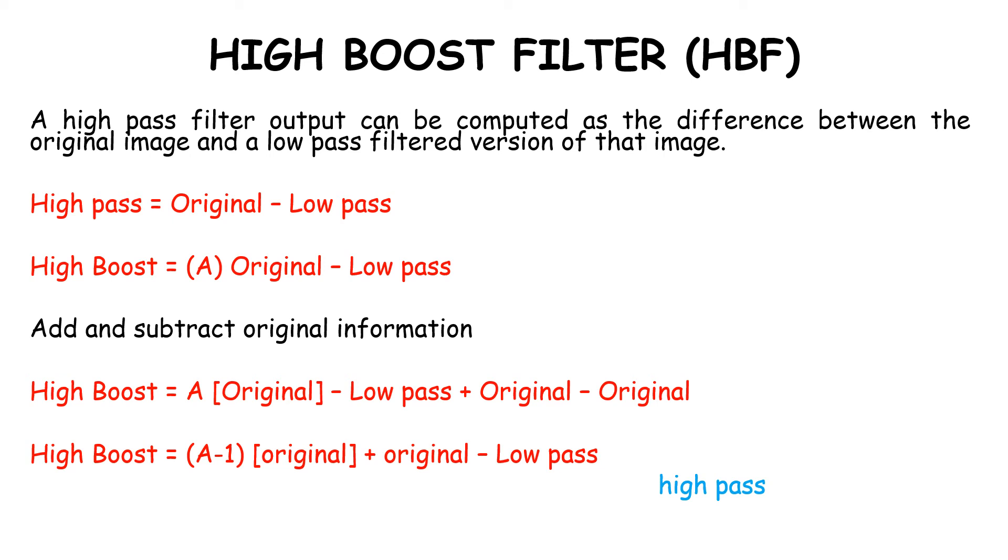Putting it together: High boost = (A-1)(Original) + (Original - Low pass). Note that (Original - Low pass) = High pass filter.